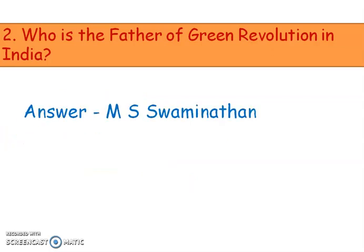The Green Revolution in India started in 1960. The modern methods used in India included high yielding varieties, fertilizers, pesticides, irrigation, and tractors. These were the initiatives of MS Swaminathan, so he was known as the father of the Green Revolution.